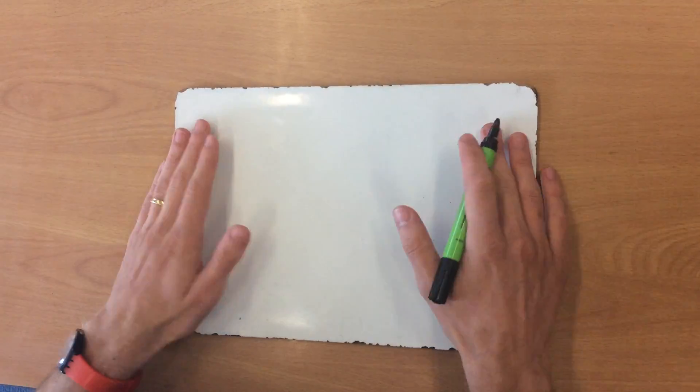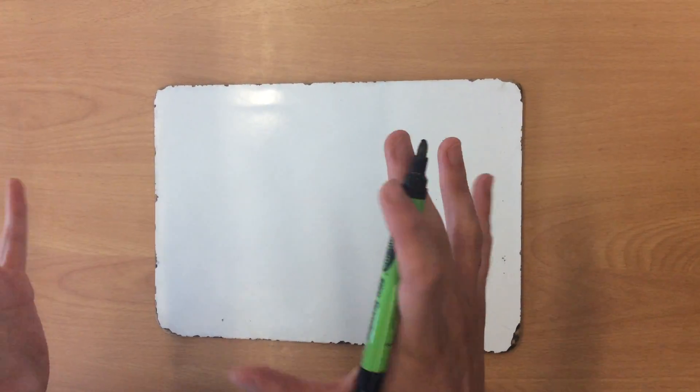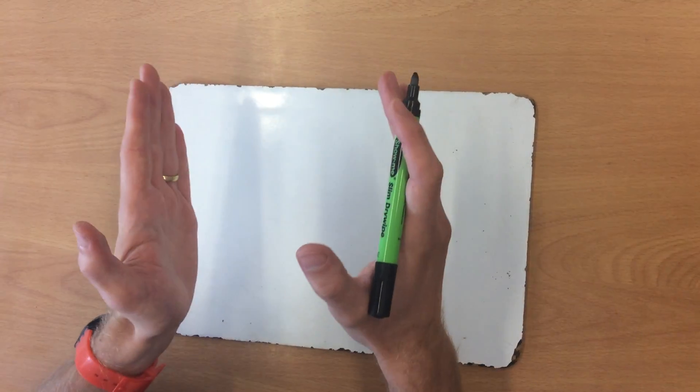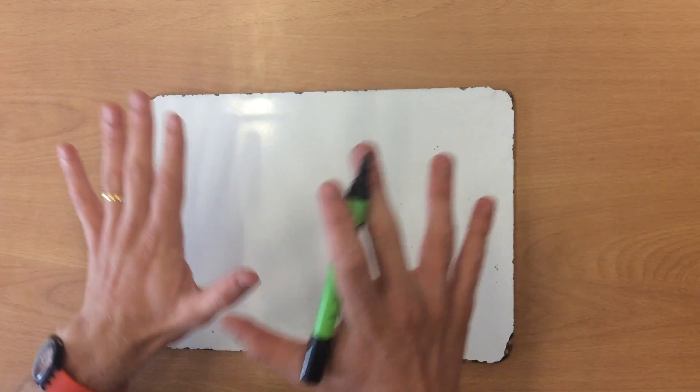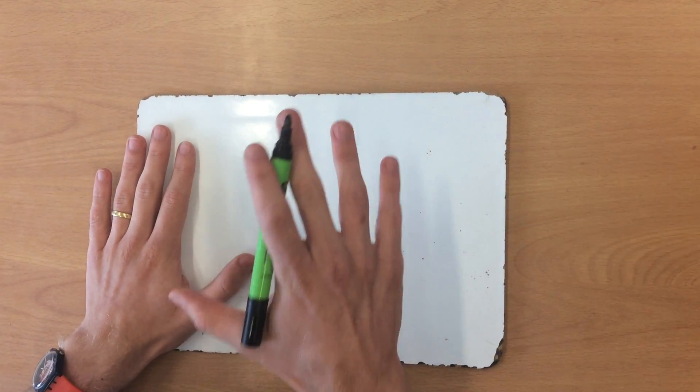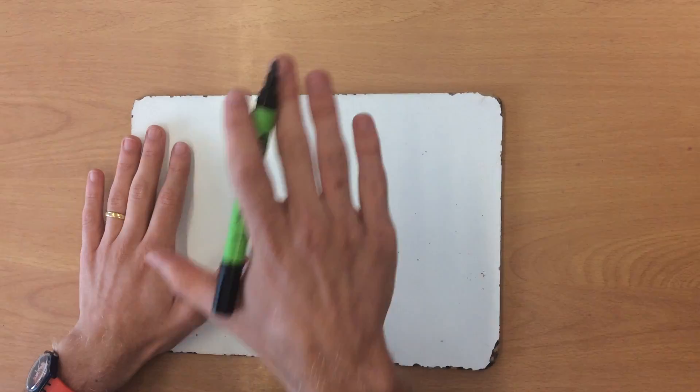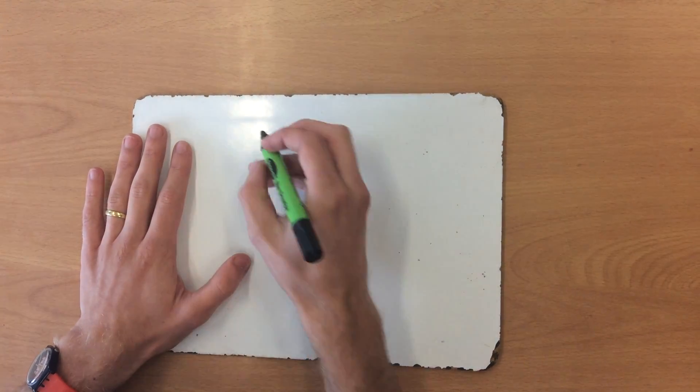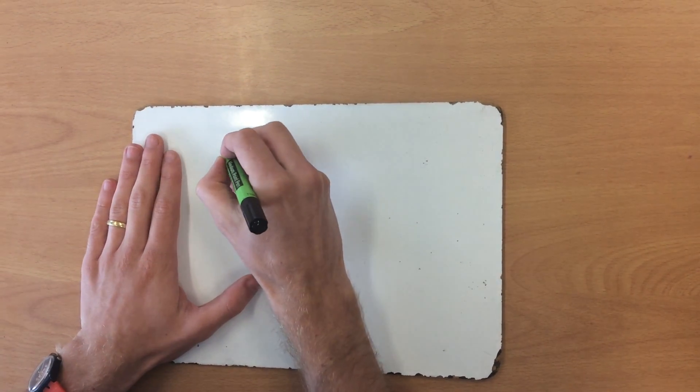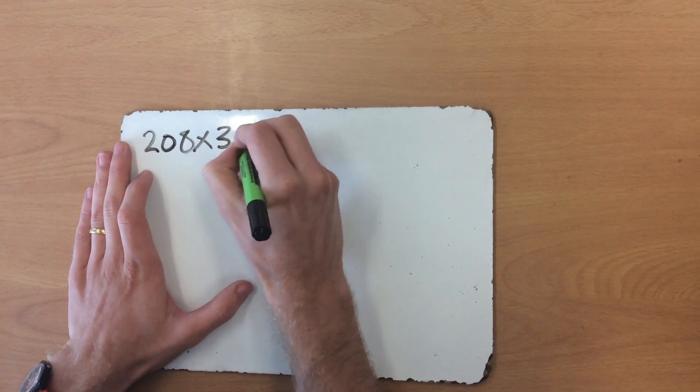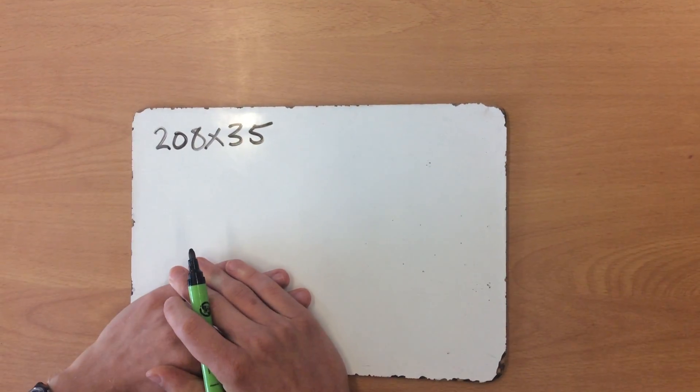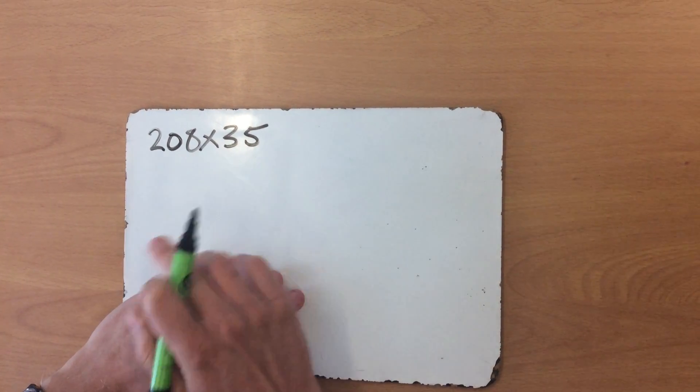I know this is something we've covered before in year five, but I want to show you a how-to guide for laying the question out, because that's where we make most of our mistakes. I'm not going to do the same question from the arithmetic paper. The calculation I'm focusing on is 208 multiplied by 35.